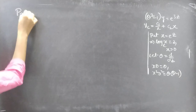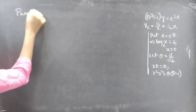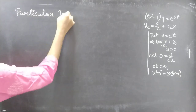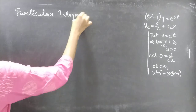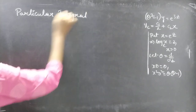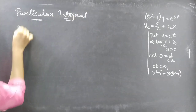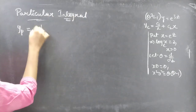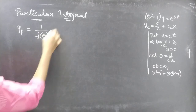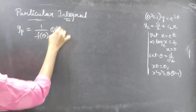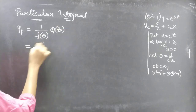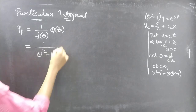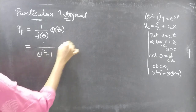Particular integral. We will find yp = 1/f(θ) · Q(z), where f(θ) = θ² − 1 and Q(z) = e³ᶻ. This is of the form 1/f(θ) · e^(az).